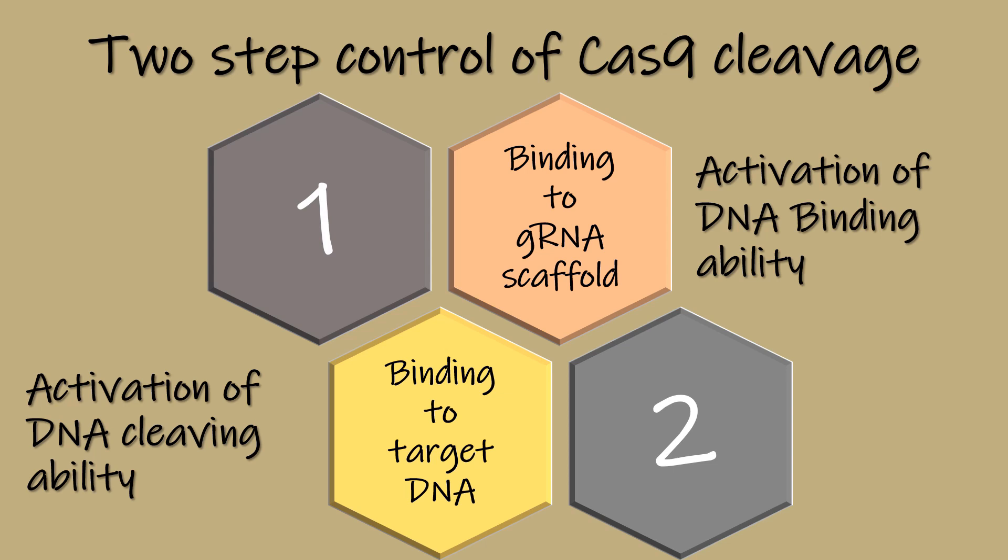As we saw, there is a two-step control on Cas9 mediated cleaving. The binding to the guide RNA scaffold activates the DNA binding ability of Cas9 protein and the binding of the target DNA activates the DNA cleaving ability. Thus, CRISPR-Cas9 system is quite efficient at targeting the correct genome.